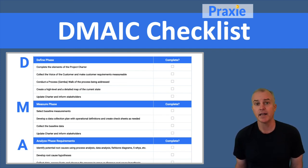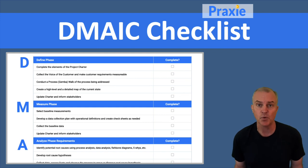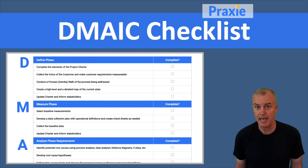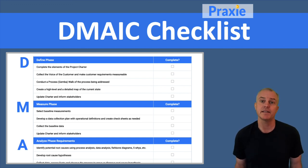So you have Define, Measure, Analyze, and Improve. Once you've made the changes, you want Control as the last stage. You want to create controls that allow you to put standards in place, documentation in place, and data collection methods in place, so that you can feed a dashboard and make sure you sustain the improvements that you made. The value of DMAIC is having a structured approach to guide you from one step to the next, covering all those critical items to make the best process improvements and have a successful project.